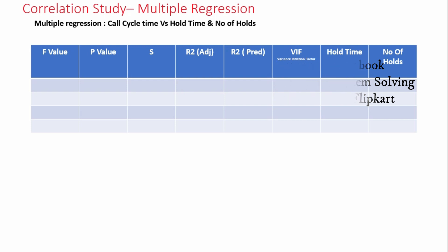While doing multiple regression I will look at the F-value, the p-value, the S-value, R-square adjusted value, R-square prediction, and VIF which is called Variance Inflation Factor. We will look at this data for hold time, number of holds, and then hold time and number of holds together. The F-value is 1869.63, p-value is 0.000, and S is 0.213. S is basically the distance of each point from the regression line which Minitab is creating.